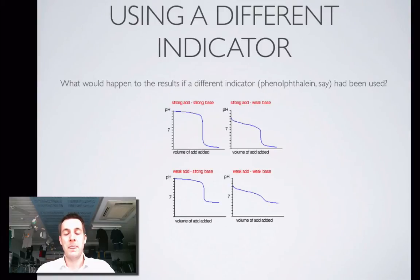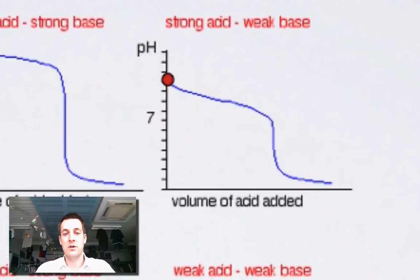Now remember, we had ammonia, and we were adding hydrochloric acid to it. So we would have started at a weak base type pH, and we'd have gone down to a strong acid. So we'd have been looking at this kind of pH curve, sorry, titration curve.